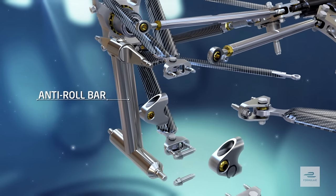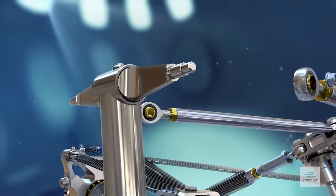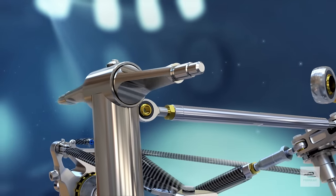The anti-roll bar is fully adjustable and allows the team to manage the roll or how much the car leans in the corners.